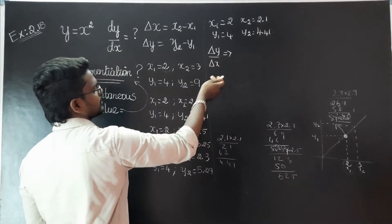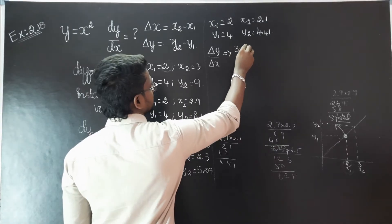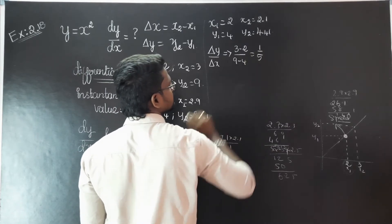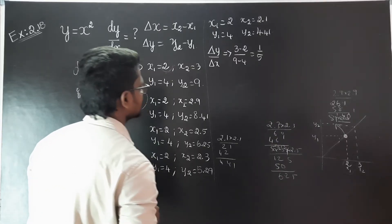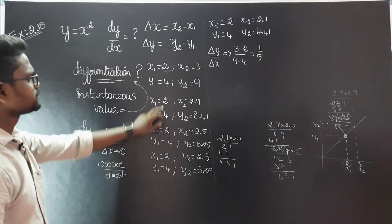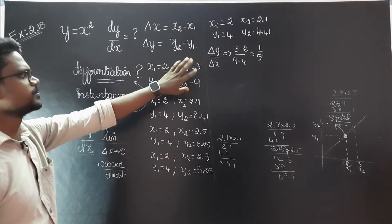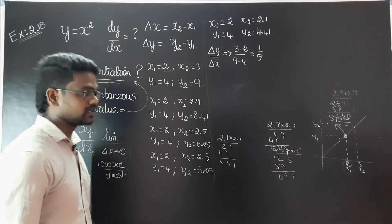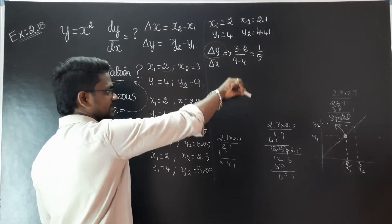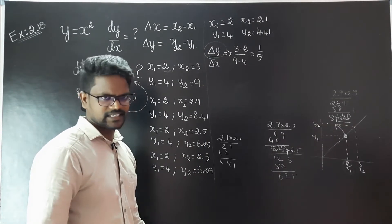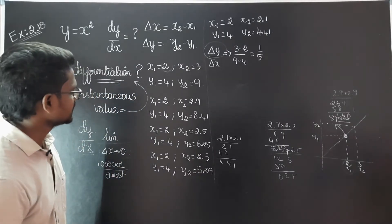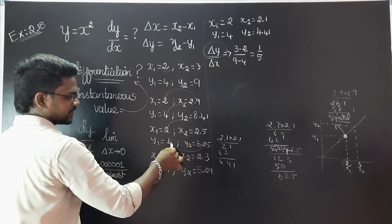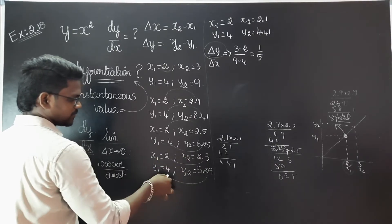The first value: 3 minus 2 divided by 9 minus 4, which is equal to 1 over 5. Update the value — so this is the simple term. Delta y by delta x — change in delta x. Here we can separate this: x2 minus x1 for delta x, and y2 minus y1 for delta y.